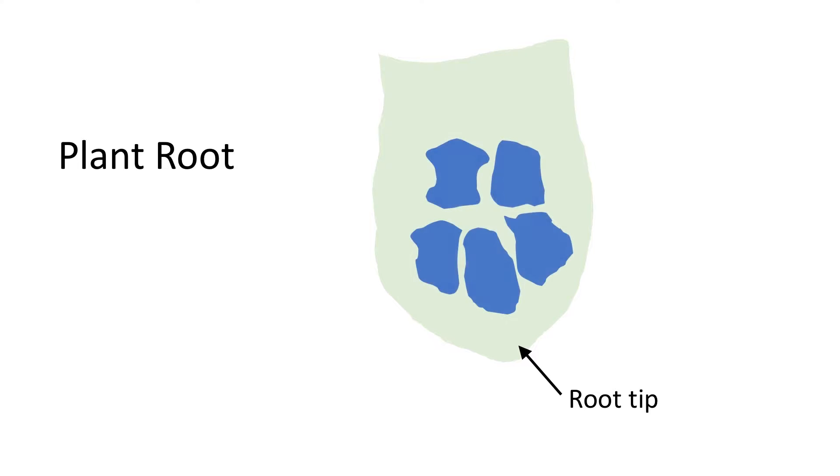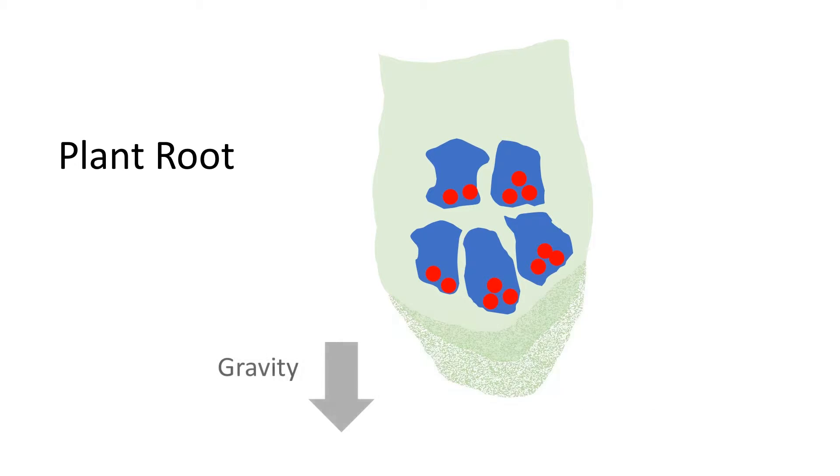In each root tip, plants have special cells that can sense gravity. These contain small but heavy particles. The plant knows which way is down based on where the particles touch the inside of the cell and their roots grow downwards.